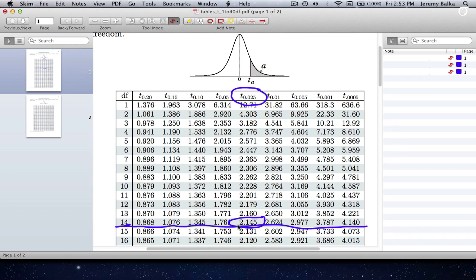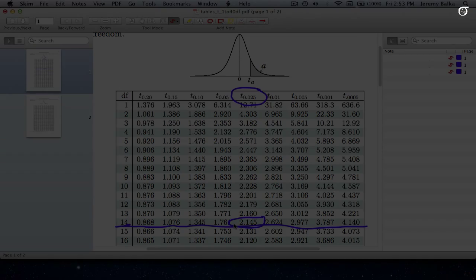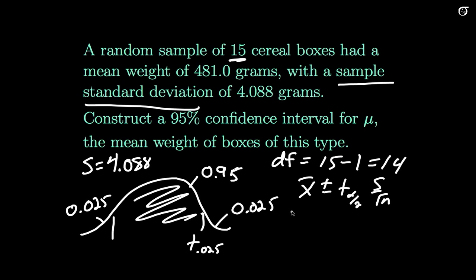Now note, had we been using the standard normal distribution, we'd have found 1.96, and this value here is a little bit bigger to account for this extra variability that is present when we are estimating sigma with s. So now let's go back and finish off this interval.